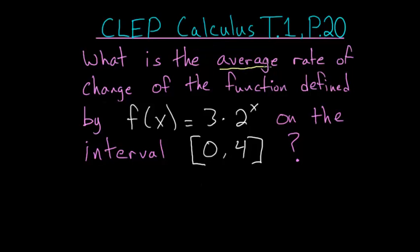What is the average rate of change of the function defined by f(x) equals 3 times 2 to the x power on the interval from 0 to 4?